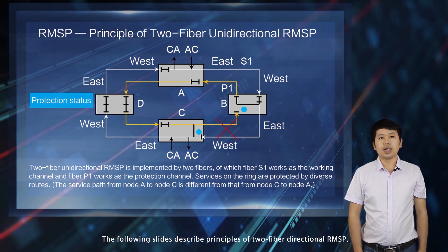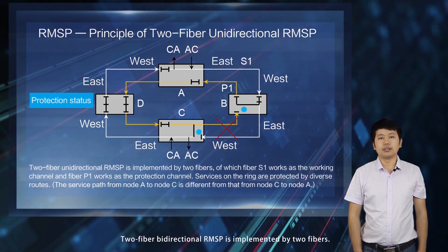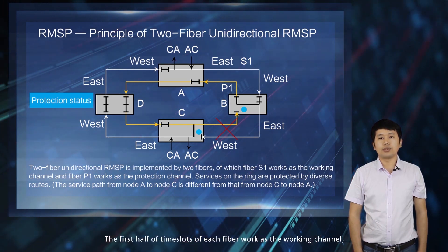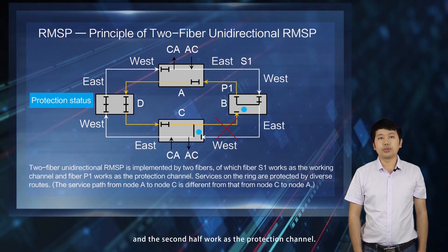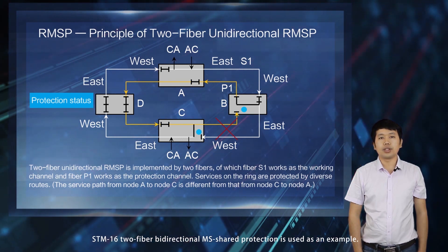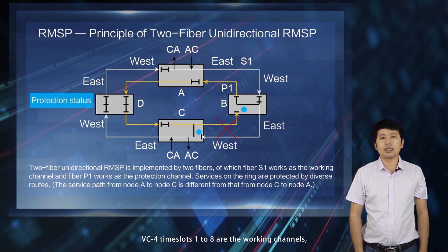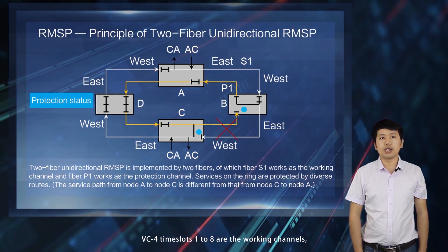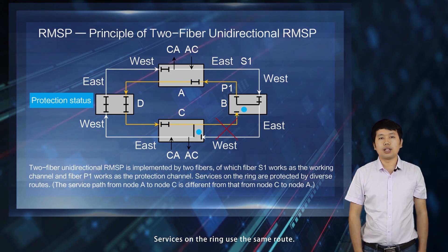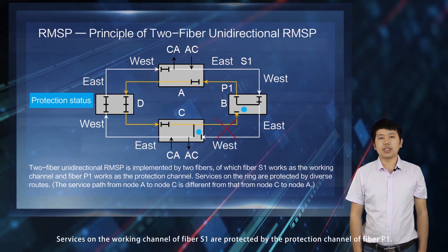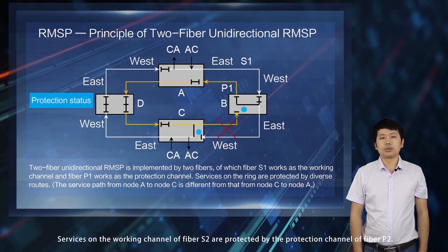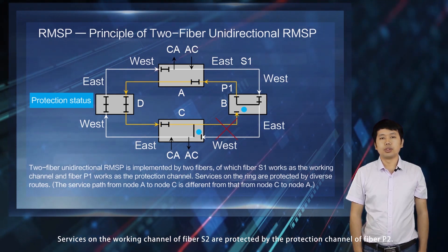The following slides describe principles of two-fiber bidirectional RMSP. Two-fiber bidirectional RMSP is implemented by two fibers. The first half of time slots of each fiber work as the working channel and the second half work as the protection channel. Using STM-16 two-fiber bidirectional RMSP shared protection as an example, VC-4 time slots 1 to 8 are the working channels and VC-4 time slots 9 to 16 are the protection channels. Services on the working channel of fiber S1 are protected by the protection channel of fiber P1, and services on the working channel of fiber S2 are protected by the protection channel of fiber P2.